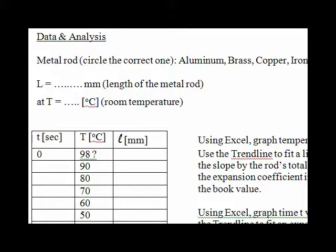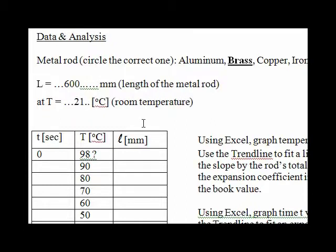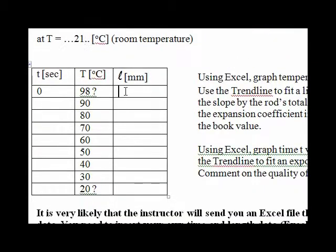This is an example calculation for the lab on linear expansion, and the metal rod used was brass. The length, as mentioned in the video, is 600 millimeters. The room temperature was 21 degrees Celsius. Students in the on-campus class would take measurements as the rod is cooling down every 10 degrees. Here, I only gave the maximum expansion and then the one at room temperature in the video.